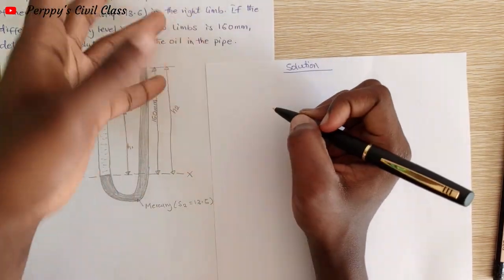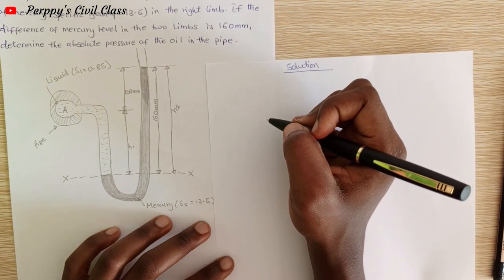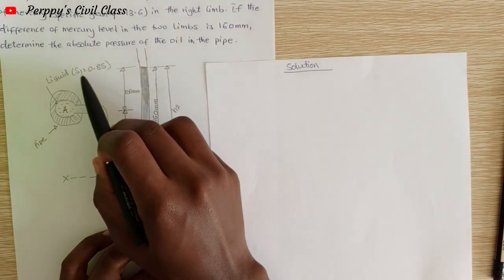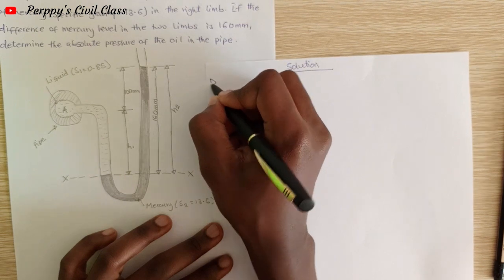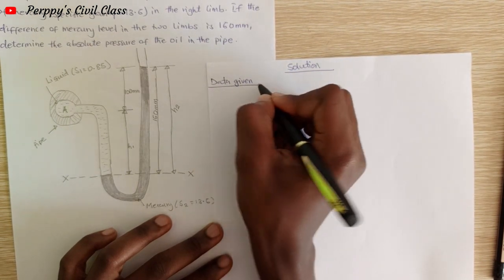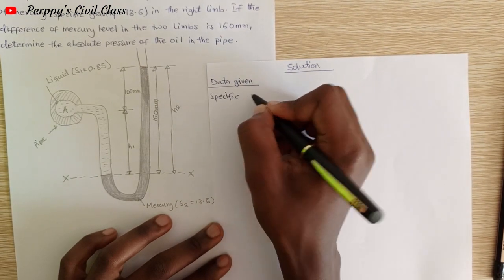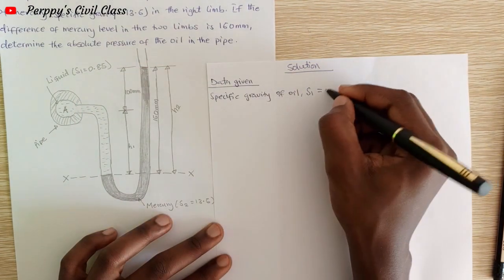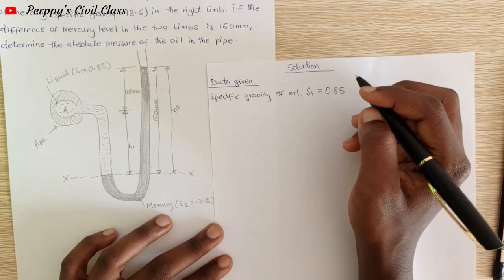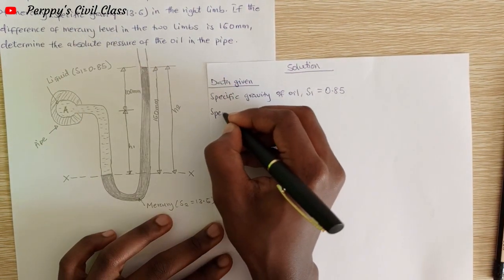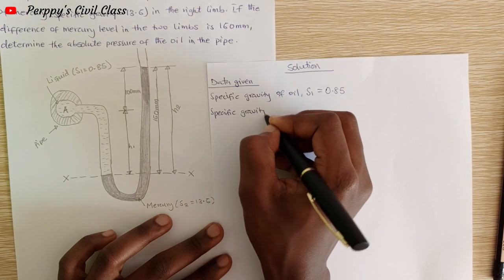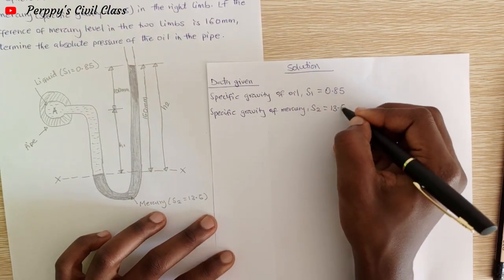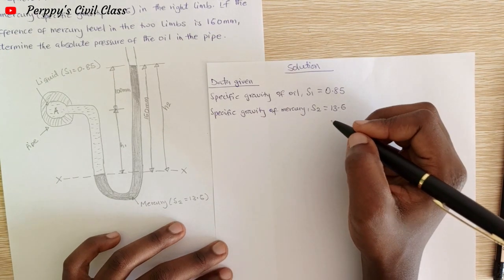Solution. There is some data given, so let's bring them out. We have the specific gravity of oil, S1, which is 0.85. The second one is the specific gravity of mercury, S2, which is 13.6.